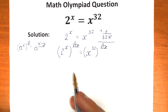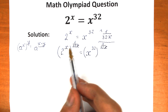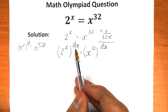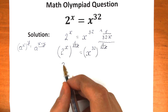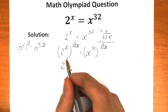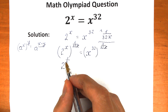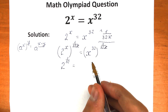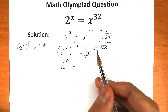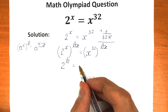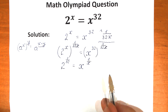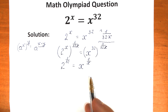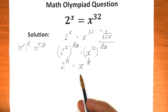Let's apply that rule here. On the left side, x times 1 over 32x — we can cancel this x and that x — giving us 2 to the power 1 over 32. On the right side, 32 times 1 over 32x — we cancel the 32s — giving us x to the power 1 over x.